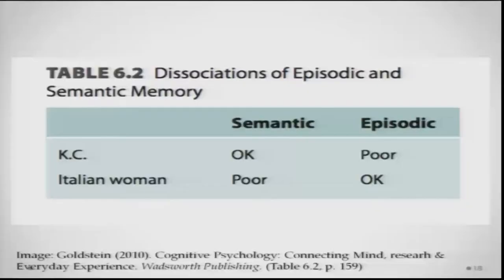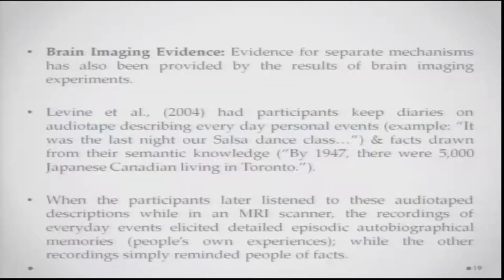Casey is good at semantic memory but poor at episodic memory, and the Italian woman is poor at semantic memory and good at episodic memory. There has also been brain imaging evidence showing that semantic and episodic memory are different.